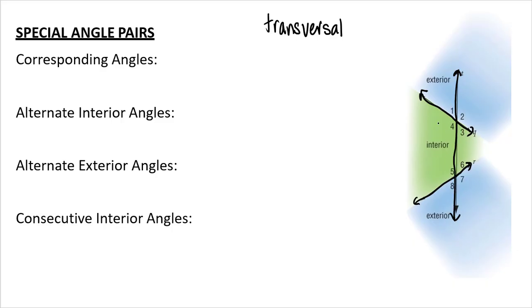And when we have two lines and a transversal, we're going to have these special angle pairs. One special angle pair is corresponding angles. And that is angles one and angle five. So the same side of the transversal and both above the transversal. So that's angles one and angle five.